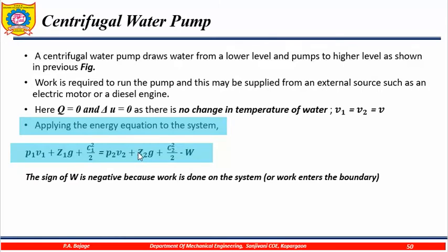...P2V2 plus Z2g plus C2 squared upon 2 minus W. Work is consumed here. This equation gives you the application of the steady flow energy equation to the centrifugal pump.